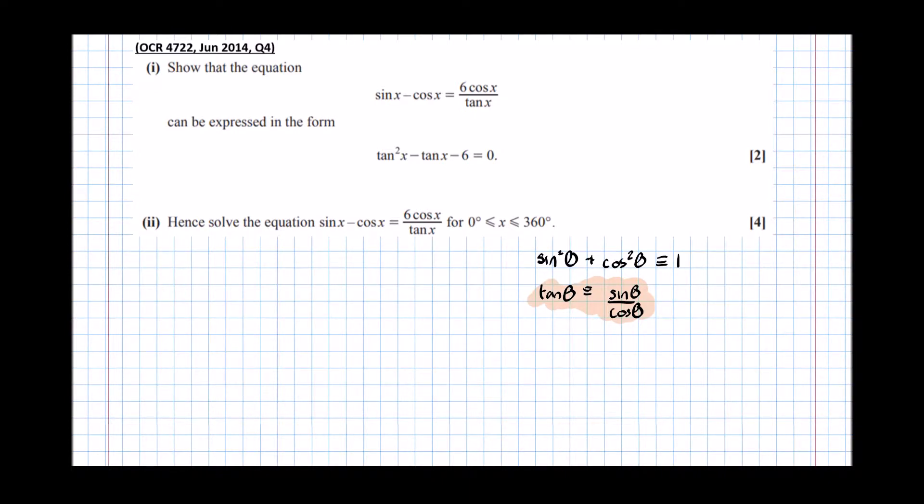So first of all, I'm uncomfortable about this tan x being on the denominator. So what I'm going to do is multiply both sides by tan x. So multiplying both sides by tan x, I get tan x sin x minus tan x cos x equals 6 cos x.